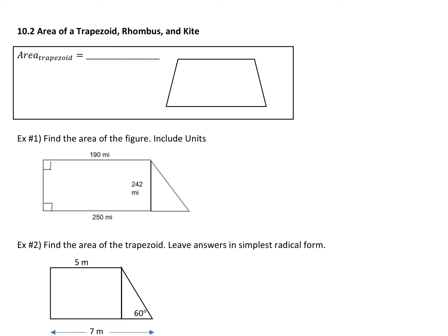All right, 10-2. We are talking trapezoids, rhombuses, and kites. And like I mentioned before, super important to know what a trapezoid looks like, what a rhombus looks like, and what a kite looks like. Okay, so here we go.